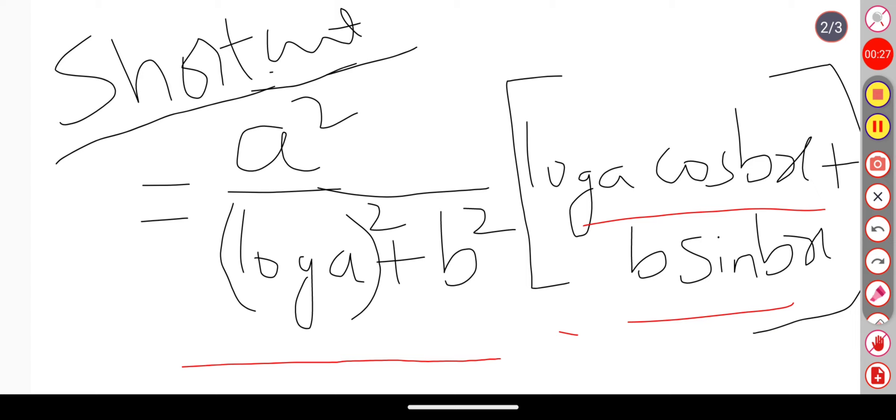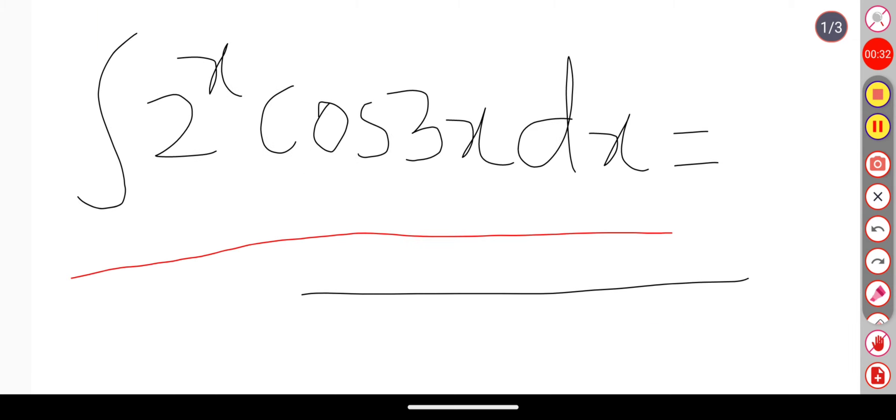If we observe this shortcut, what are the things we require? We require only a and b value. So from this question, we can say that my a value is nothing but 2 and my b value is nothing but 3.